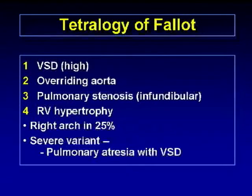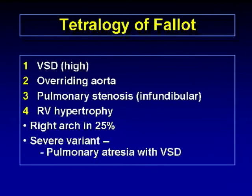To remind you: tetralogy of Fallot consists of VSD, overriding aorta, pulmonic stenosis (usually infundibular), and right ventricular hypertrophy. A right aortic arch is seen in 25% of cases. The severe variant is pulmonary atresia with VSD, as we just saw.